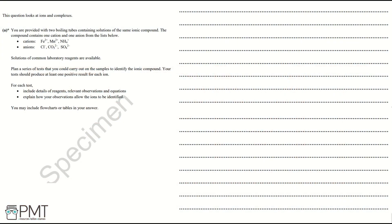This question looks at ions and complexes. Part A: You're provided with boiling tubes containing solutions of the same ionic compound. The compound contains one cation and one anion from the lists below. Solutions of common laboratory reagents are available.